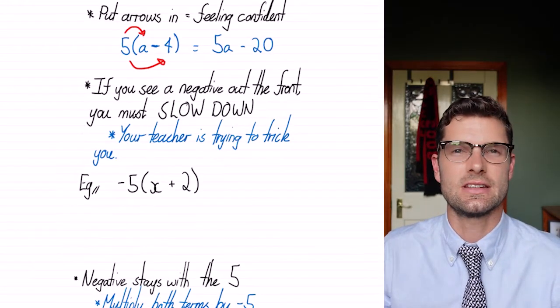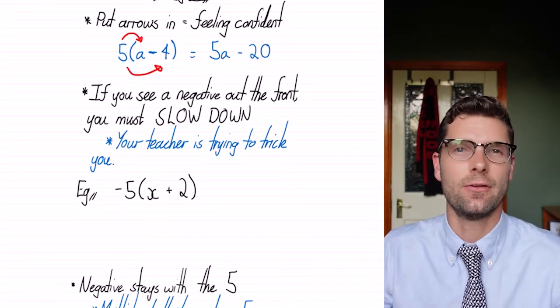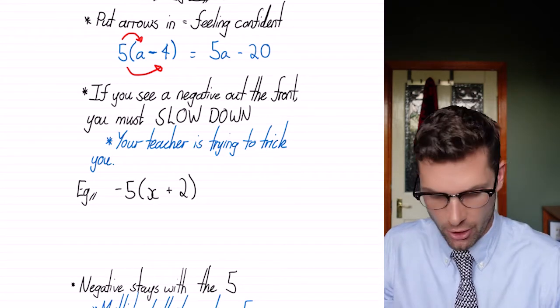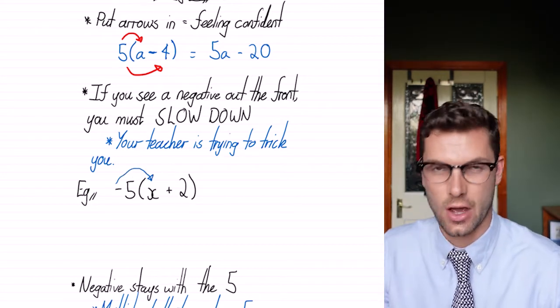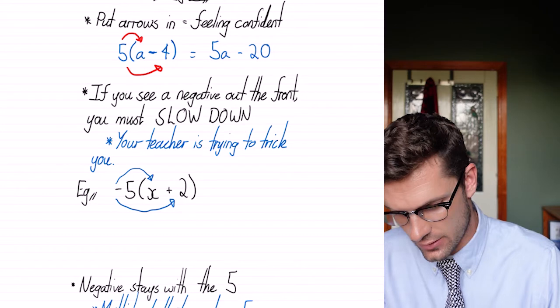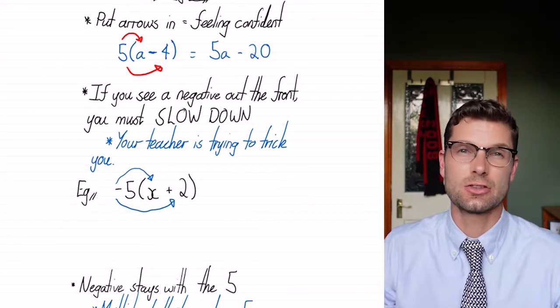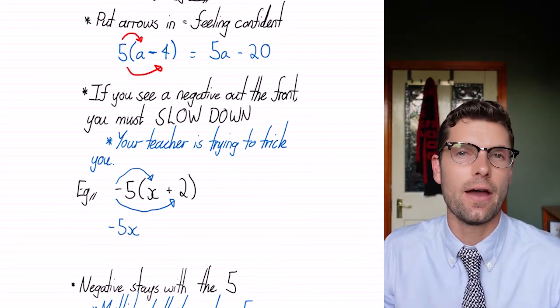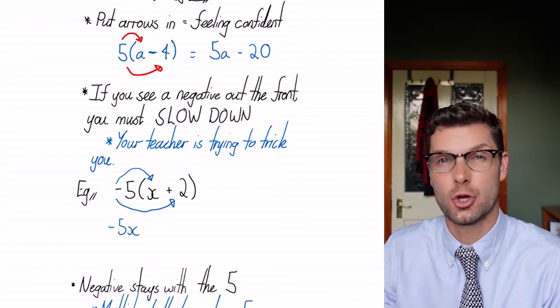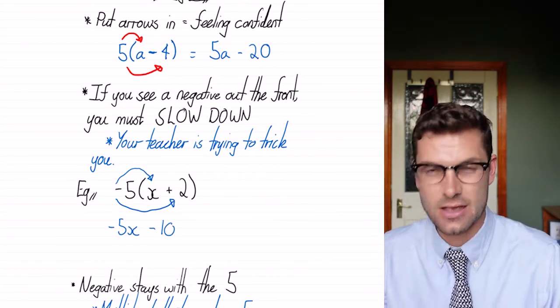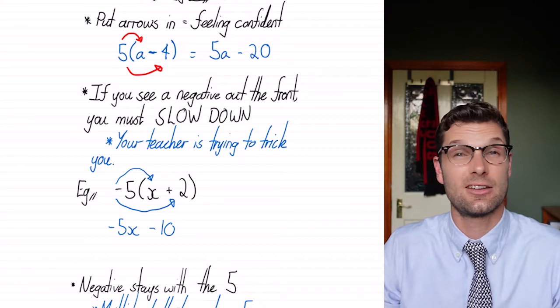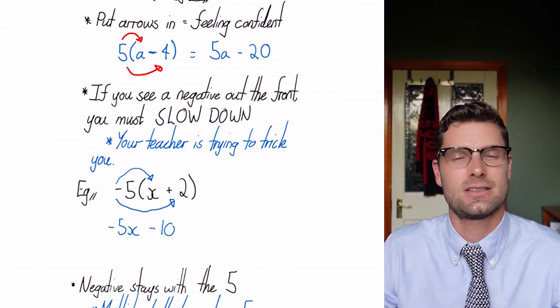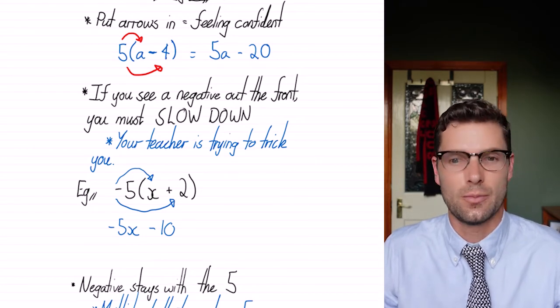So we're gonna have a look at this first example. So this minus five out the front is multiplied by everything within the brackets. So we're gonna throw our arrows in there as well. So we've got minus five times by x and then minus five times by two. So minus five multiplied by x is negative 5x and then minus five times by positive two is negative 10. So this is where a lot of students make mistakes and lose easy marks. So just slow down with that first arrow and you might be able to save yourself a bit of grief.